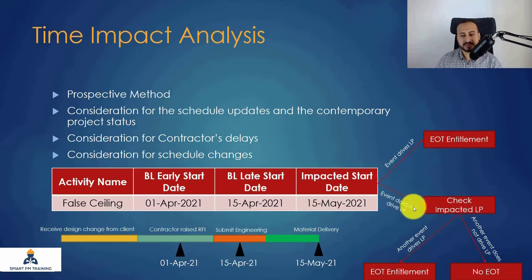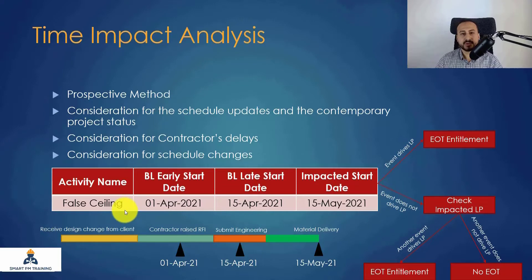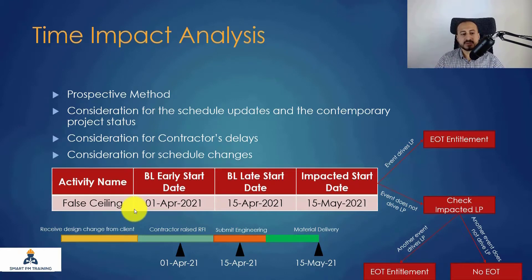If the event does not drive the longest path, we check the impacted longest path first. It is possible that another event is driving the longest path. For example, beyond the false ceiling delay, there could be two or more delay events — and when all events are inserted into the program, only one may drive the longest path.